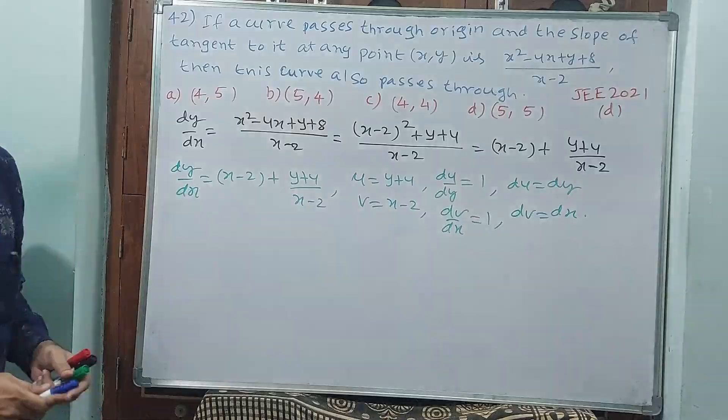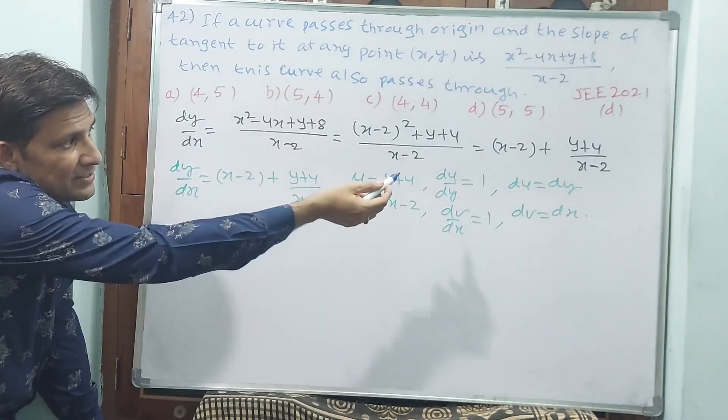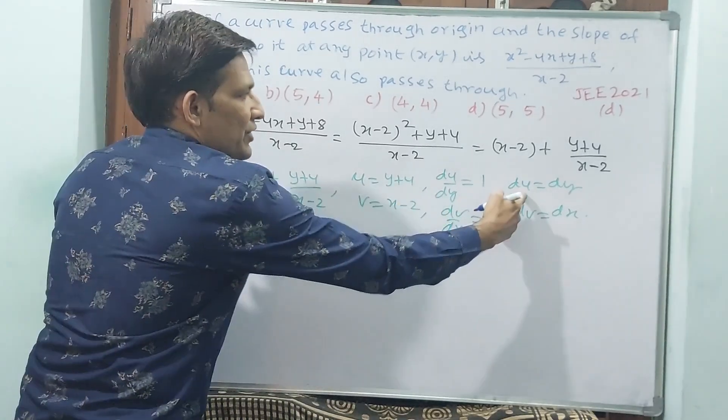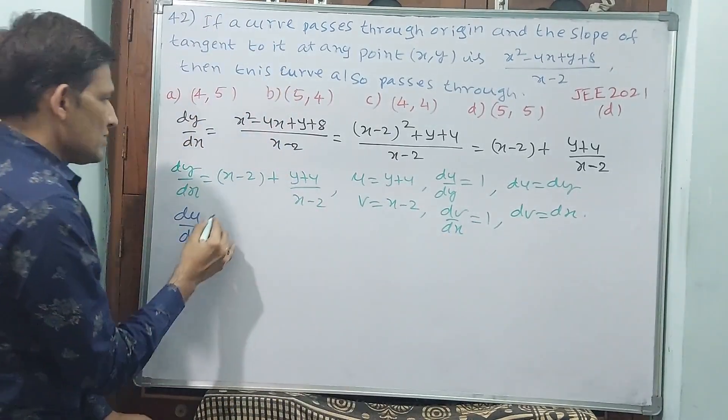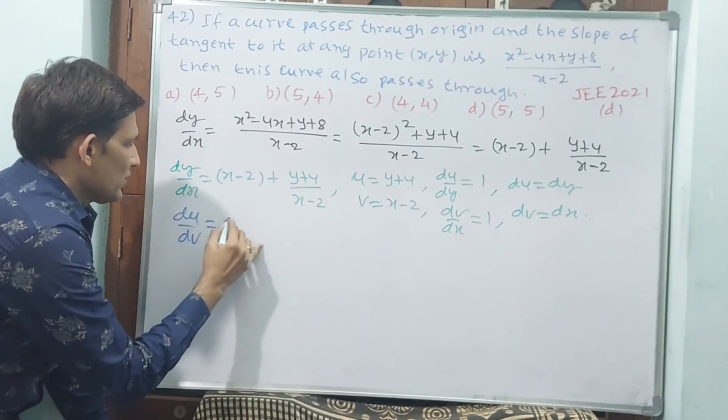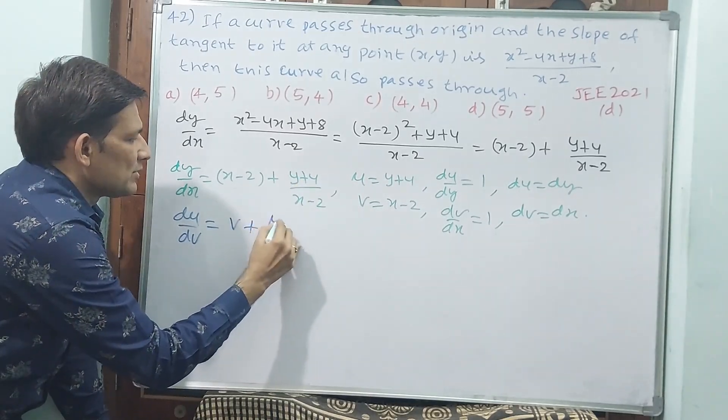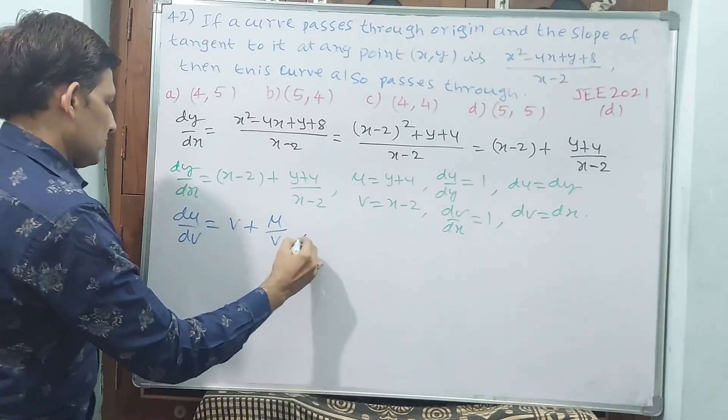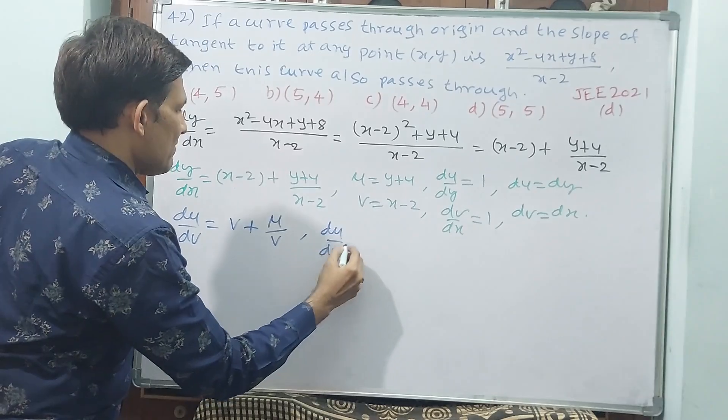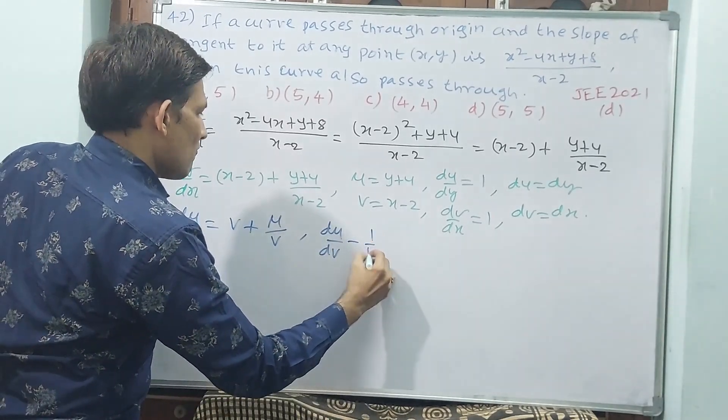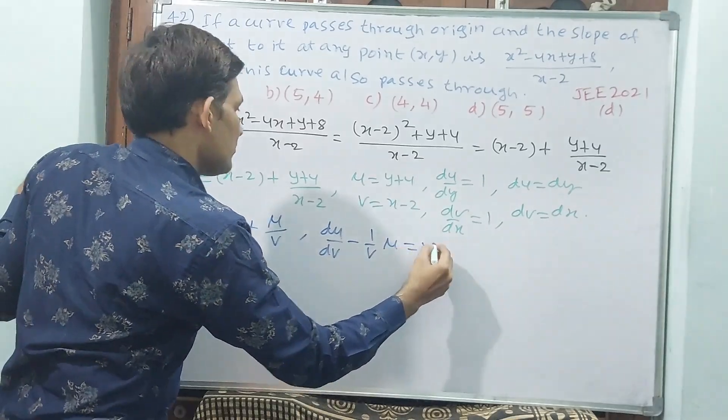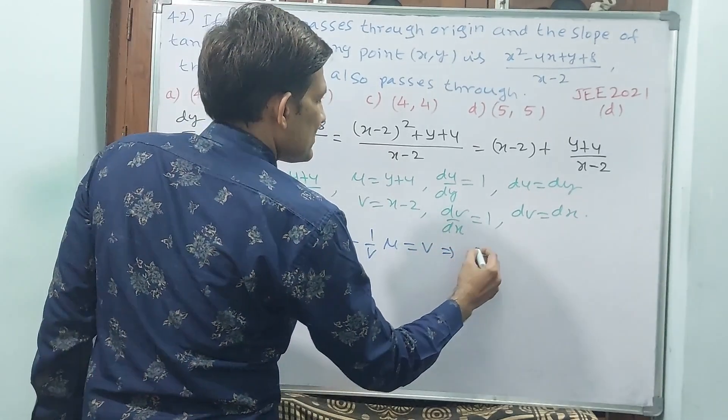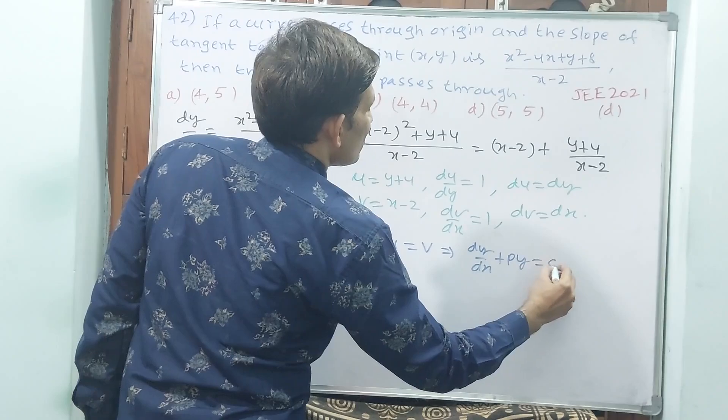What you can understand from that? Shall I write dy/dx equals du/dv? dy means du, dx means dv, equals - you have taken this as v plus u by v. Now send this to the other side. du/dv minus (1/v)u equals v. This is in the form of dy/dx + Py = Q.